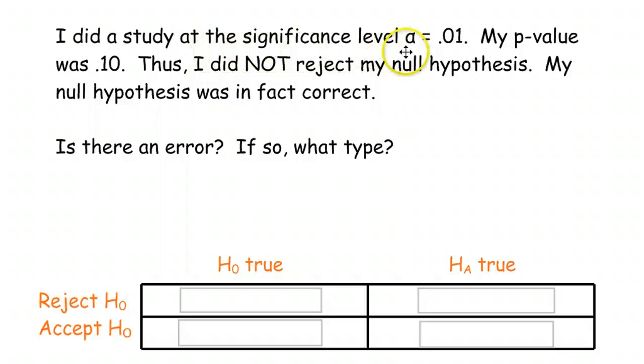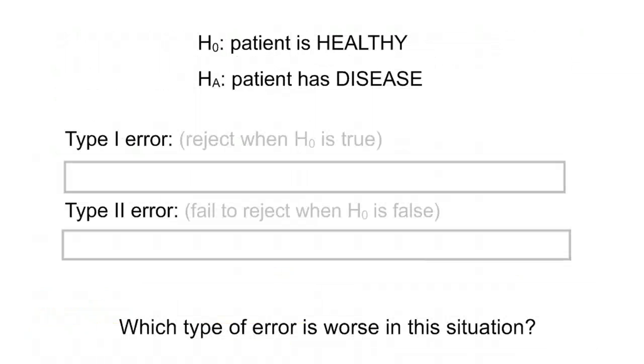And then, last example. Did a study at the significance level alpha is 0.01. My p-value was 0.10. Therefore, I did not reject the null. Our p-value was too high. So, I did not reject. And found out that my null hypothesis was, in fact, correct. If you accept the null and it turns out to be true, you did the right thing. So, there is no error.